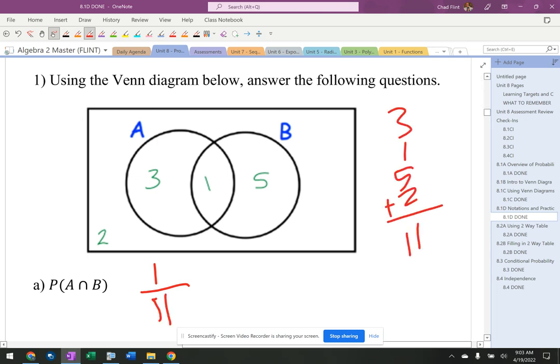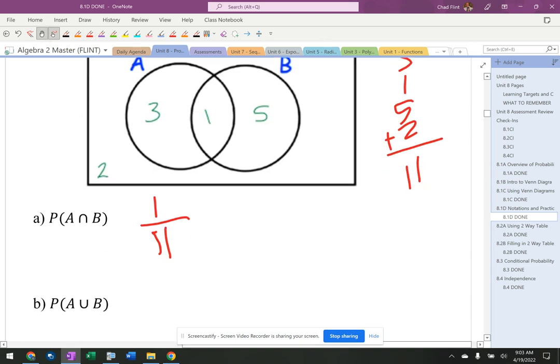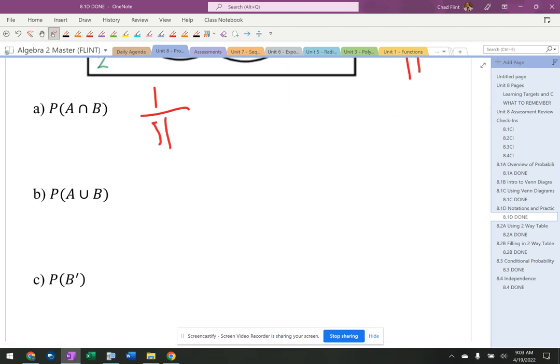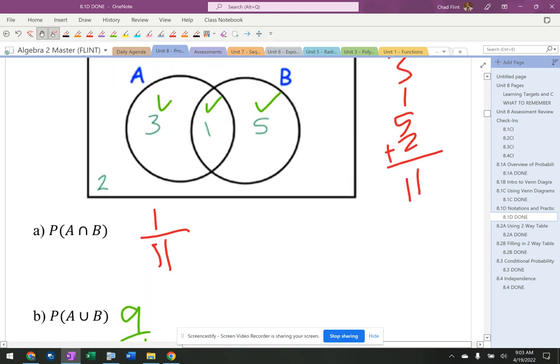A or B, that is anything inside the circle, so 3 and 1 and 5 is 9, so it would be 9 out of 11. All right, are inside the circles.